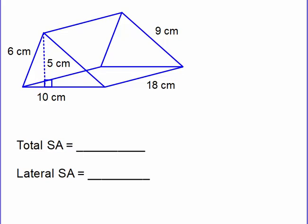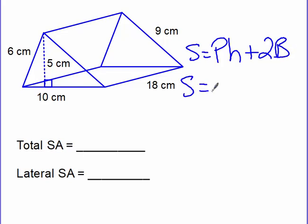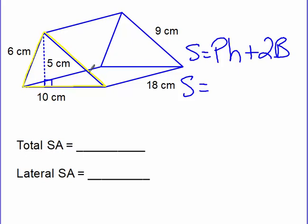Okay, let's see how you did. Step number one, write the formula down: S equals perimeter of the base times the distance between the bases, plus 2 times the area of the base. So step number one, let's highlight our triangle. My triangle is right there. Now we need to add those pieces together. I know this one's 10, I know this one's 6, and back here it's 9. So we're going to add 10 plus 9 plus 6, which gives us 25 for our perimeter.